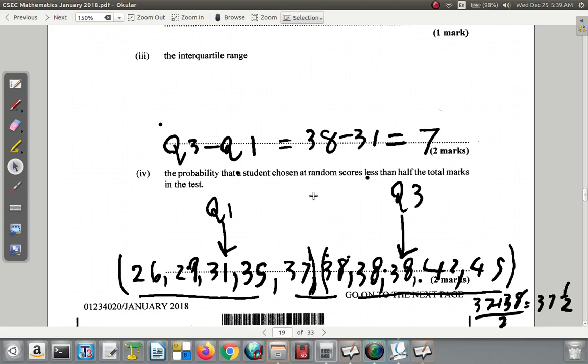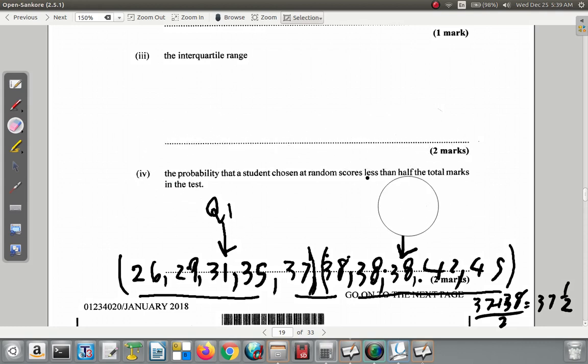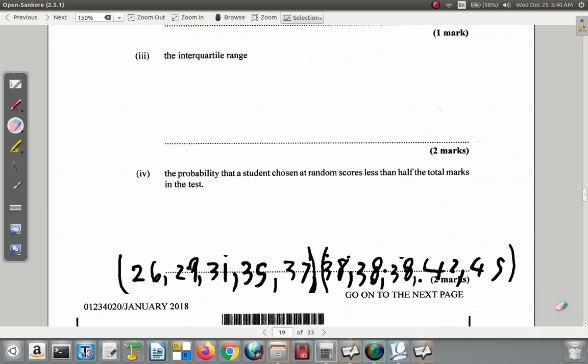So you're looking at the probability that they score less than half, less than 30. Half of 60 would be 30, so the score less than 30. Let's do some erasing to make some space here. Now these numbers are already arranged in order. These are the scores.